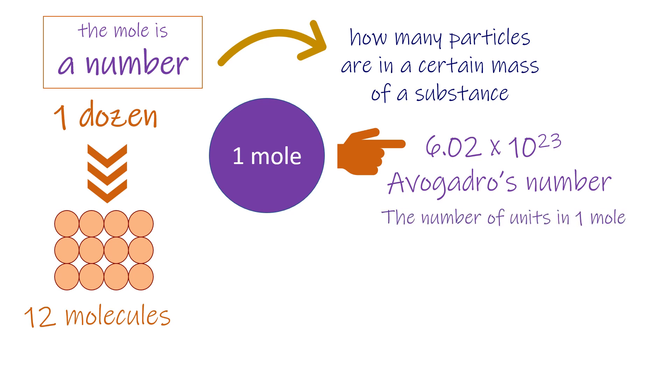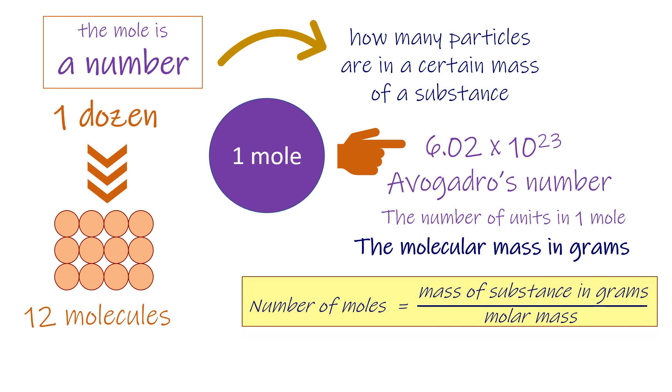This number is called Avogadro's number. It is the number of units in one mole of any substance, and defined as its molecular weight in grams. You can find the number of moles of a substance by using the mass of substance, and the relative atomic mass or relative molecular mass.